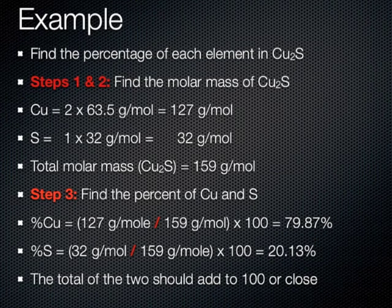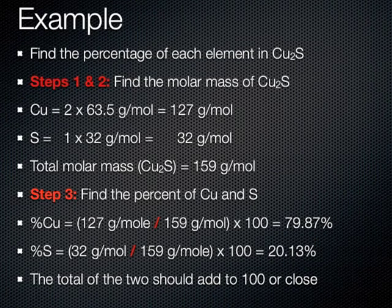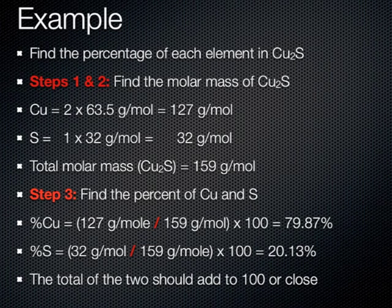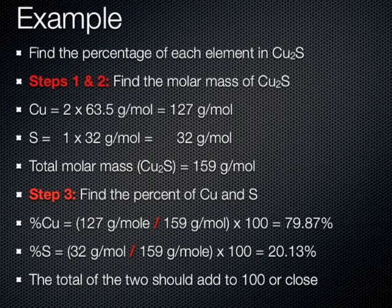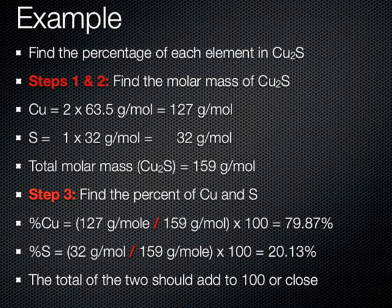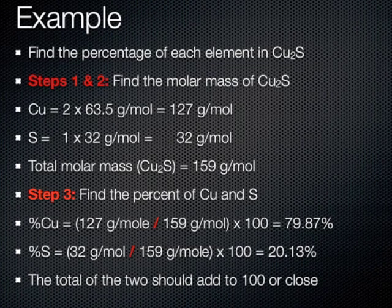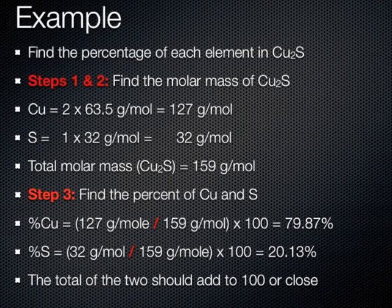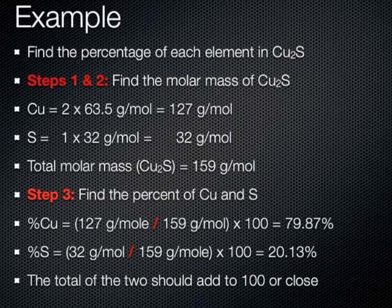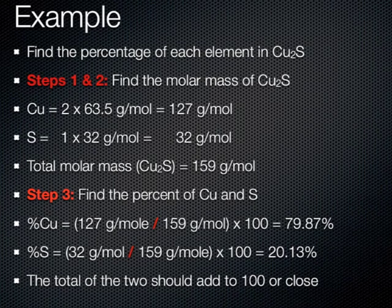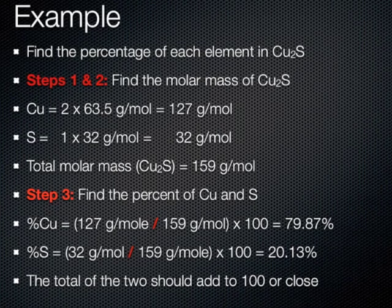Since we've done step two already in step one, we can continue on with step three, finding the percent of copper and sulfur. The percent of copper, then, is equal to 127 grams per mole divided by the total molar mass of 159, and we multiply that by 100 to get 79.87%. We do the same for sulfur,